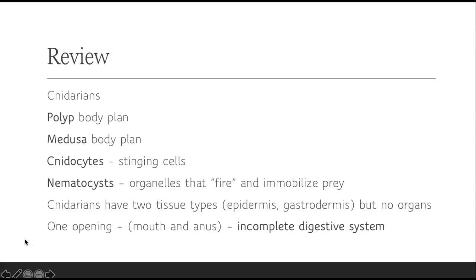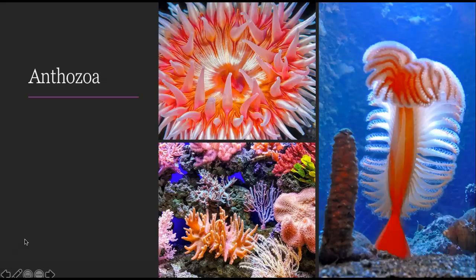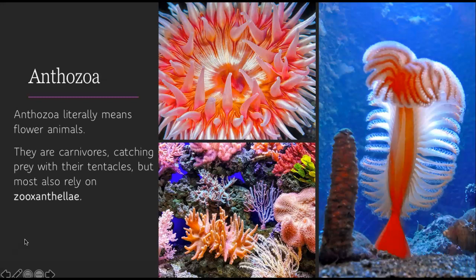Then we talked about cnidarians. They have a polyp body plan and a medusa body plan. And they have those specialized stinging cells called cnidocytes, and those nematocysts, which are the organelles that fire and immobilize prey. Cnidarians have two types of tissues, epidermis and gastrodermis, but no organs. And they have one opening that serves as both the mouth and the anus, which means they have an incomplete digestive system. Then we talked about the anthozoans, literally flower animals. They're carnivores that catch prey with their tentacles, but mostly rely on tiny microscopic algae called zooxanthellae that do photosynthesis and give them extra energy. They have no medusa body plan, just polyp form — those are your sea anemones, sea pens, and corals.